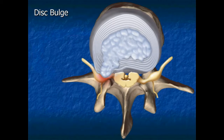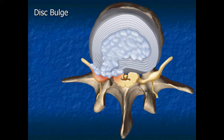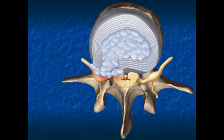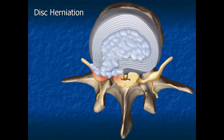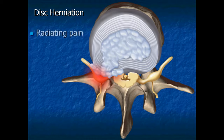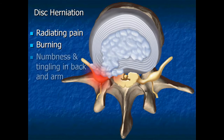In some cases, disc fibers rupture, allowing the nucleus pulposus material to protrude, creating a disc herniation. This protruding disc material can press on a nerve root, which can result in radiating pain, burning, numbness, and tingling in the upper back and down the arm.